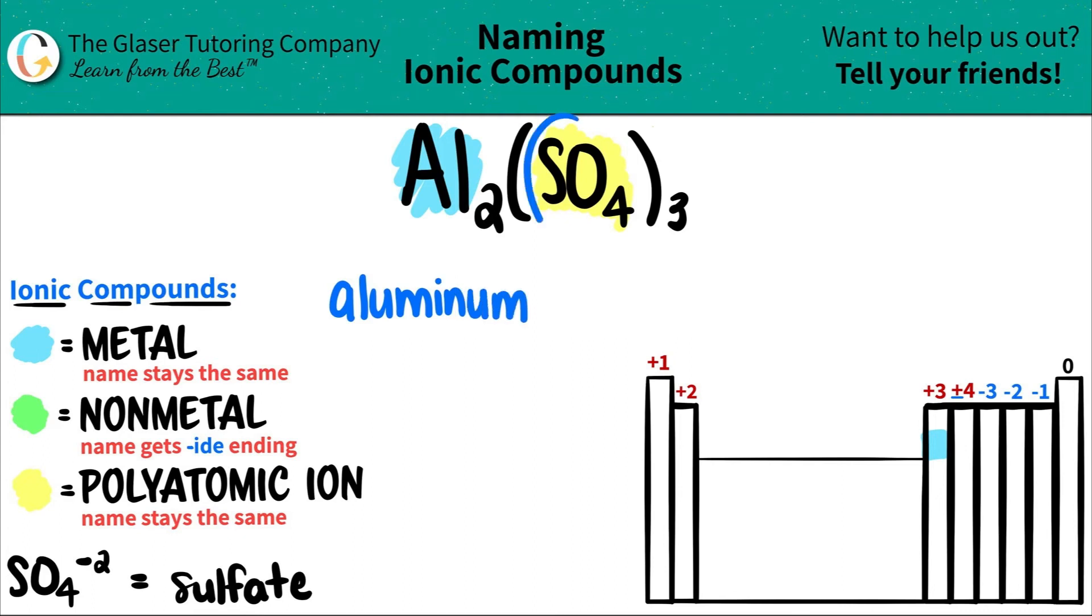And then the polyatomic ion comes next, but polyatomics are easy because those names always stay the same. Just got to make sure you memorize them. So sulfate is just going to stay sulfate.